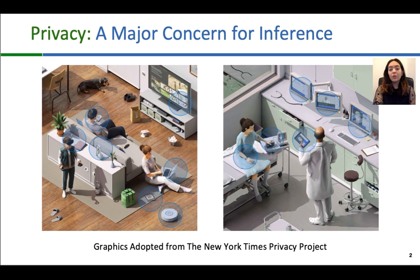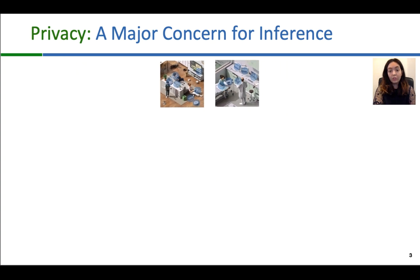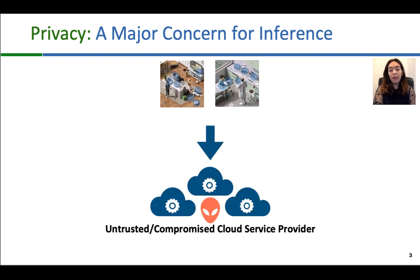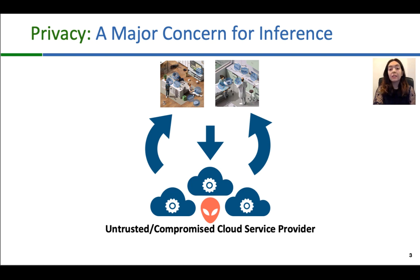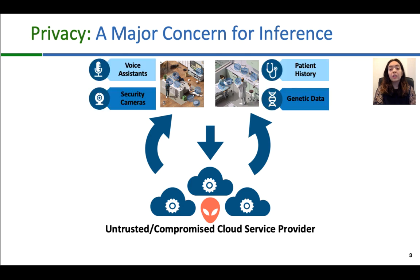Deep learning is deployed everywhere these days, from cars to handheld devices, smart homes and hospitals. To receive services from online service providers, we send our personal information to the cloud where an inference task is executed on them and the result is returned to us. The data we send is in raw format, which contains much more information than what is actually required for the inference service. In many cases, this data is sensitive, such as patient history, genetic data, and data from voice assistants and security cameras.